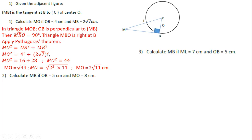So 4² = 16, and (2√7)² = 4 × 7 = 28, since squaring cancels the radical. Then MO² = 16 + 28 = 44. Taking the square root, MO = √44. Using prime factorization, 44 = 2² × 11, so MO = 2√11 cm.